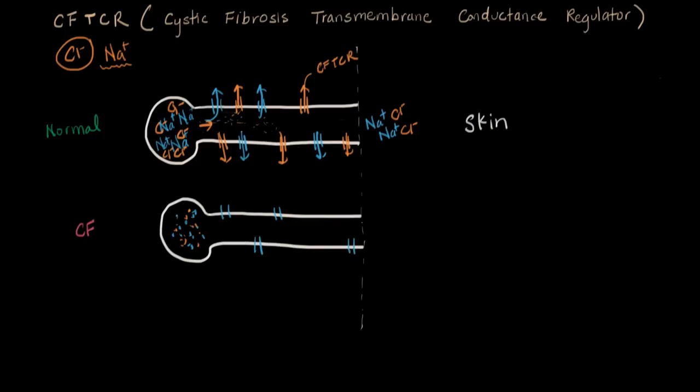However, this time, the CFTR gene is not working, so the chloride channels are all messed up. So they look like this, it's not open. So as the chloride floats down this way, it can't leave. You see, it just has to stay in here, and it keeps going towards the skin.